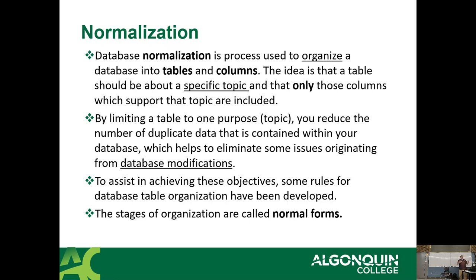Database normalization is the process used to organize a database into tables and columns. The idea is that a table should be about a specific topic, and only the columns that support that topic are included. We want each table to be about one thing and one thing only. In Access, for example, a student table has information about students only — not courses, programs, schedules, or lockers. When you limit a table to one purpose, you reduce duplicated data, which helps eliminate database modification issues known as anomalies.